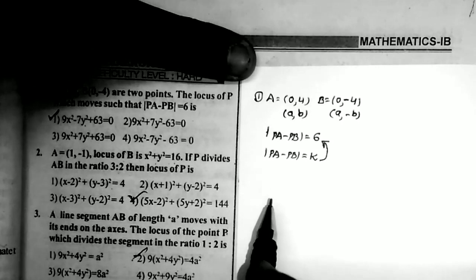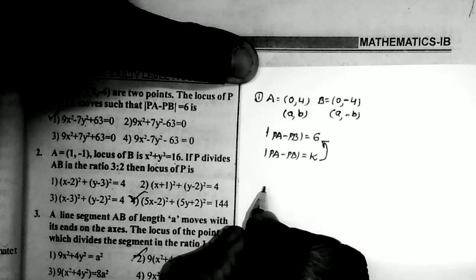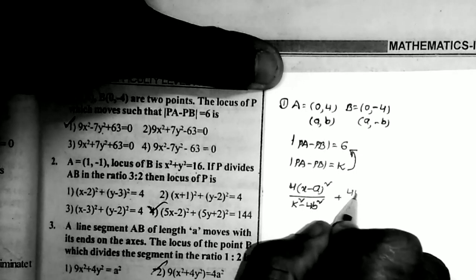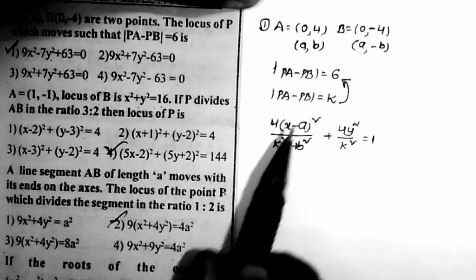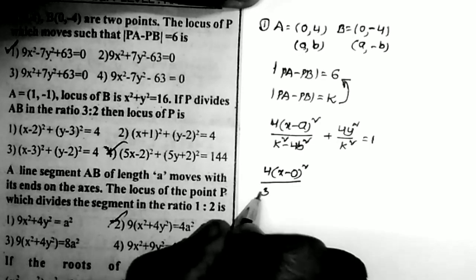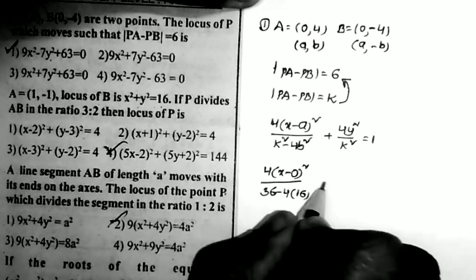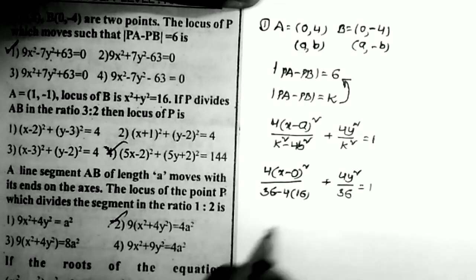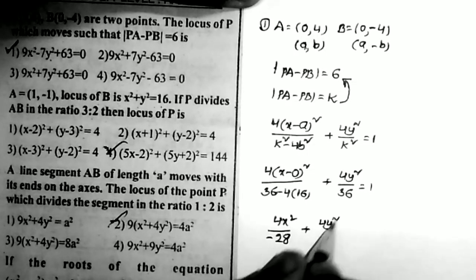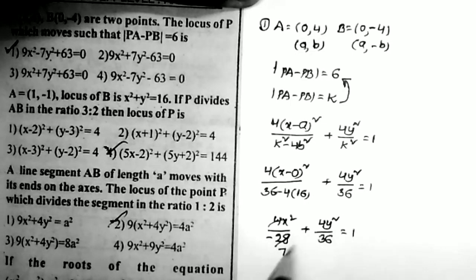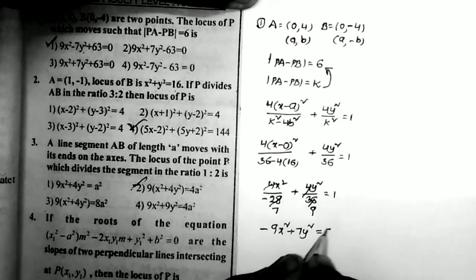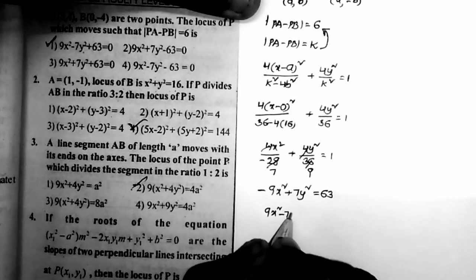To find the locus, we use one formula: 4(x - a)² / (k² - 4b²) + 4y² / k² = 1. Replacing the values: 4(x - 0)² / (36 - 64) + 4y² / 36 = 1. That is 4x²/(36 - 64) + 4y²/36 = 1, which simplifies to -9x² + 7y² = 63.